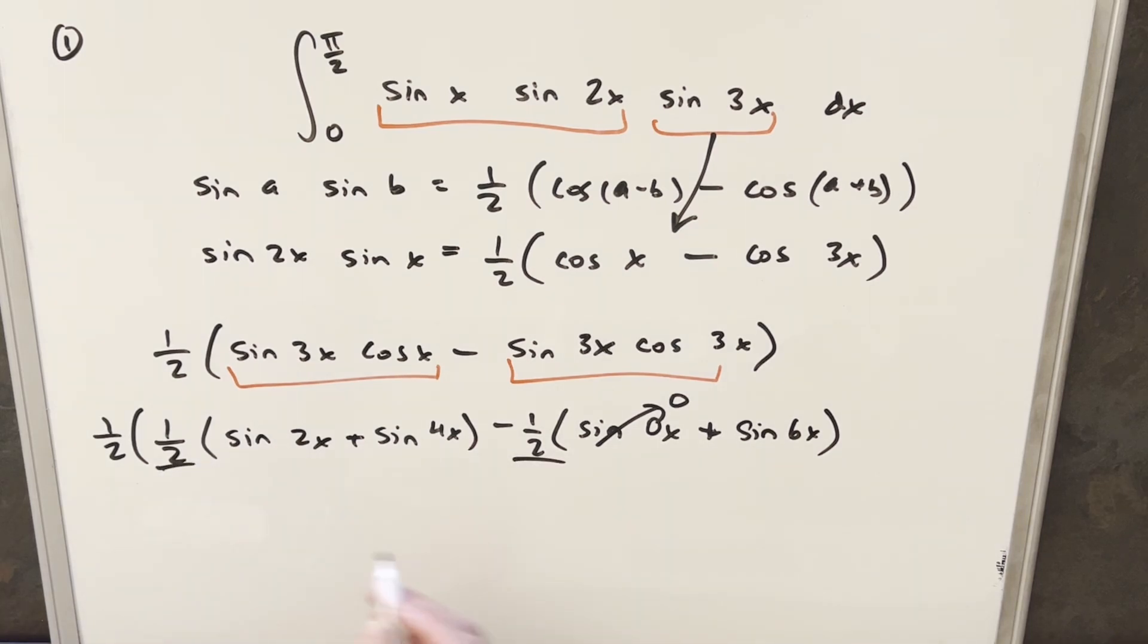But now I can just take these 1 halves and factor them out. So we just have a 1 fourth in front of the whole expression. And then we're just going to have sine 2x plus sine of 4x here. And then here I'm going to have a minus sine of 6x. But now at this point, this is something that we can integrate pretty easily. So let's put this back into the integral so we can finish it off.